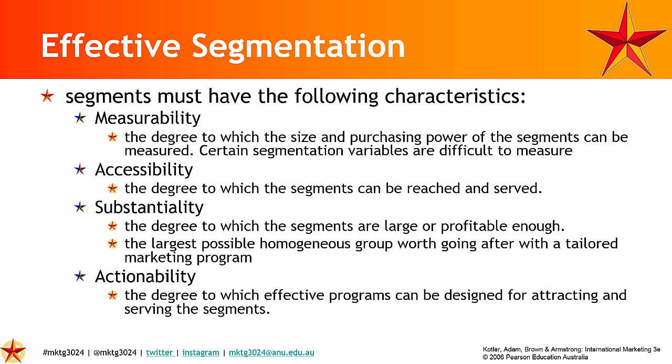Effectively, what you're trying to create is a homogenous group — internally similar and differentiated from other groups — so that it's worth targeting them with a focused marketing program. This is why I talk about single specific targeted groups: because you want to be able to tailor a marketing program to that audience. This leads us to actionability — if you can't tailor a marketing mix to that segment because you don't have a clear enough view of it, go back and measure. If you can't put the mix in front of them properly, your distribution channel will fail and you'll lose your accessibility function.